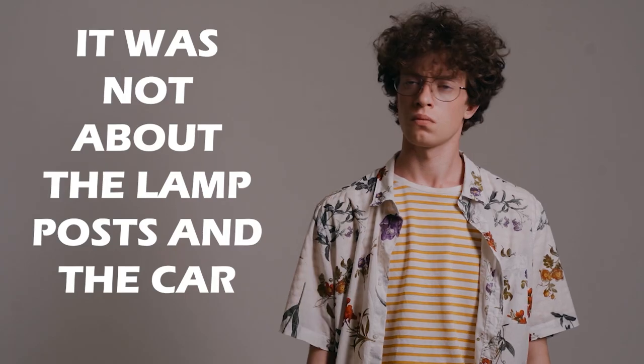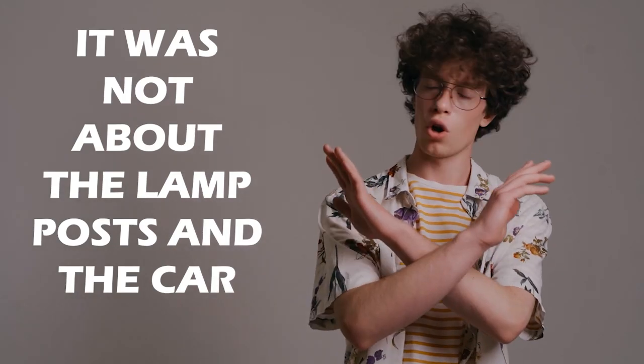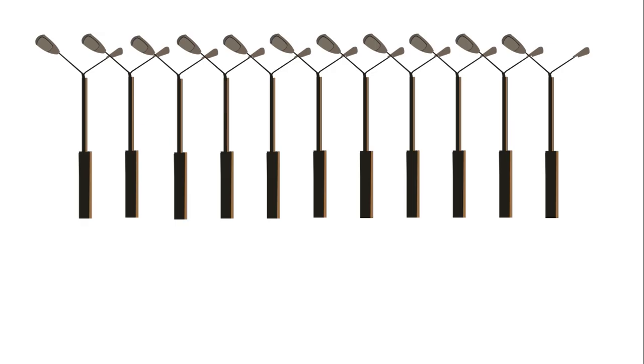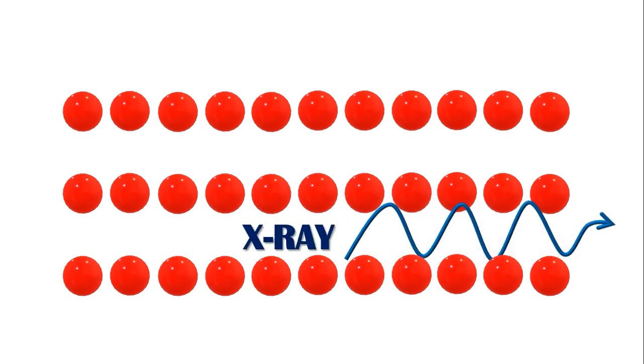Of course, I was not talking about the lamppost and the car. You can map the lamppost directly to the periodic array of atoms, and the car actually symbolizes the light - to be specific, the x-ray - that is actually passing through that periodic array, or in other words, the crystal.